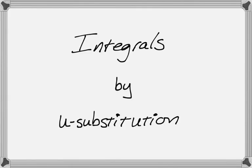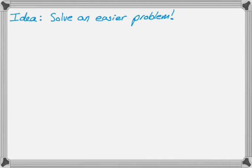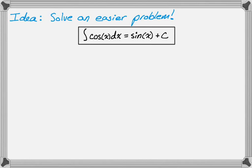In this video we're going to be talking about finding integrals by doing u-substitution, which is actually a basic idea. The idea is that we're going to try to solve an easier problem. Most of the integrals that you are given initially must be the derivative of something that you recognize. For example, we know that the integral of cosine of x dx is equal to sine of x plus c, because if we take the derivative of sine of x, we get cosine of x.